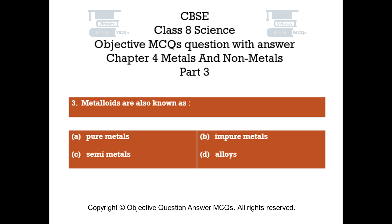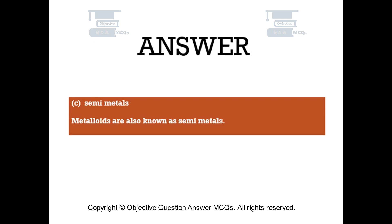Question number 3. Metalloids are also known as. Option A: pure metals. Option B: impure metals. Option C: semi metals. Option D: alloys. The right answer is option C. Semi metals. Metalloids are also known as semi metals.